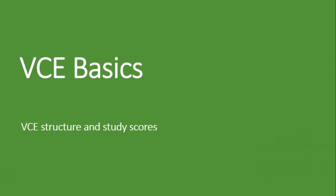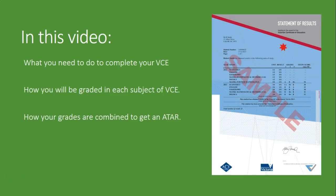This one is aimed primarily at year nines and tens, and is about how VCE processes work and ultimately how you go from your year 11 and 12 classwork to an ATAR at the end. In this we'll be covering what you need to do to complete your VCE, how you're going to be graded in each subject, and how those grades are combined to give you an ATAR.